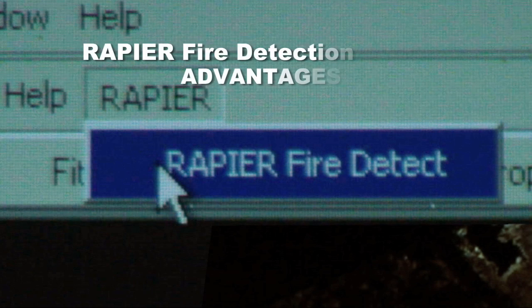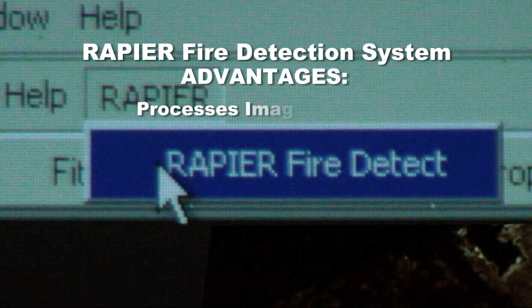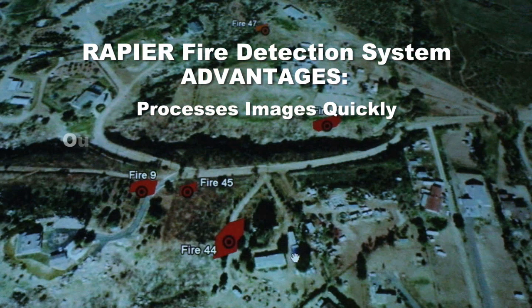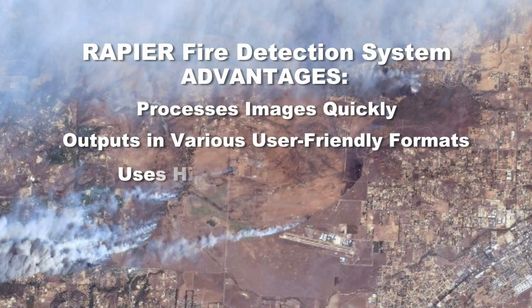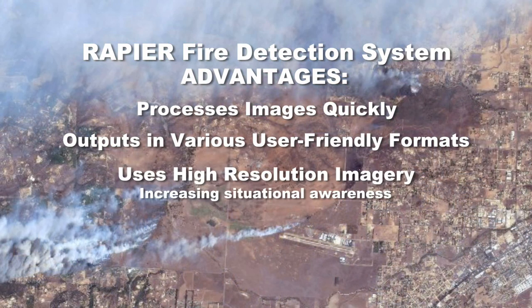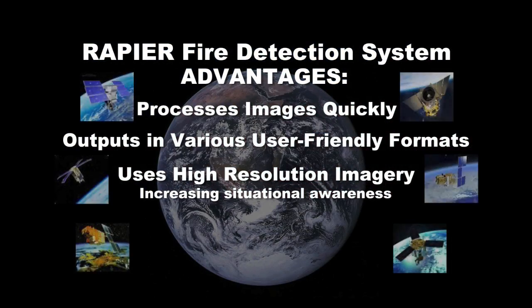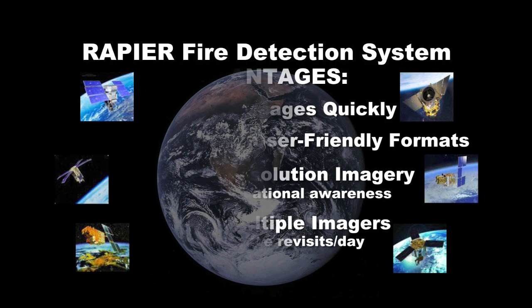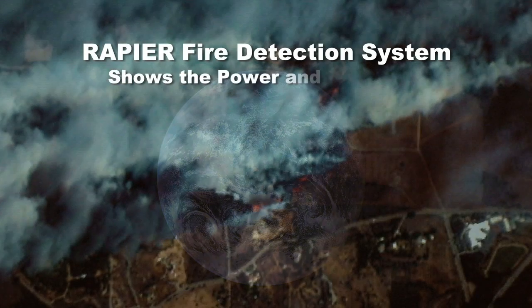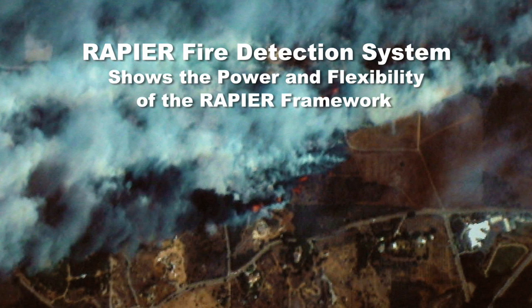The Rapier Fire Detection System processes images quickly, outputs in various user-friendly formats, uses high-resolution imagery increasing situational awareness, and handles multiple imagers allowing more revisits per day. It also shows the power and flexibility of the Rapier Framework.